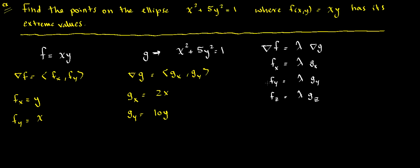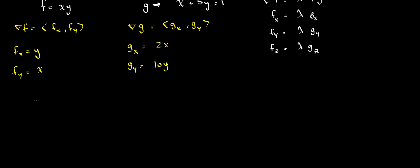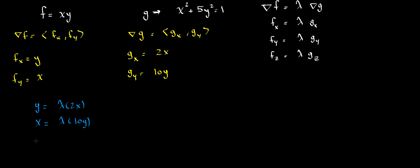Now let's write down the equations. We can say that y equals lambda times 2x, and x equals lambda times 10y. We have two equations and three unknowns, so we need a third equation — which is the constraint. The third equation is x squared plus 5y squared equals 1. Now we have three equations and three unknowns and can solve the simultaneous equations. I'll call these equation 1, equation 2, and equation 3.